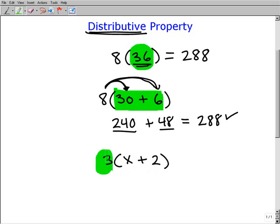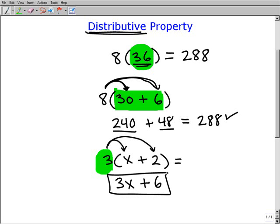So if you remember, what you're going to do, you're going to take that 3, and you're going to distribute it to the x. So that gives me 3x, and then you're going to add it to 3 times 2, which is 6. But we can do this in algebra. The reason why we can do this is precisely because of the distributive property.